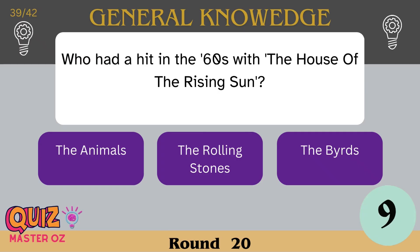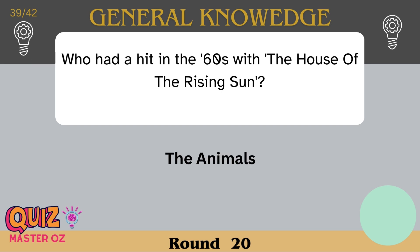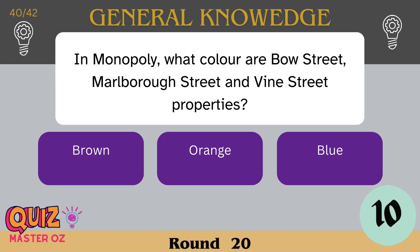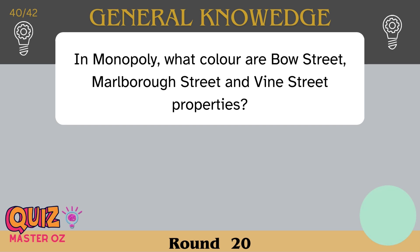Who had a hit in the 60s with 'House of the Rising Sun'? The Animals. In Monopoly, what colour are Bow Street, Marlborough Street and Vine Street properties? Orange.